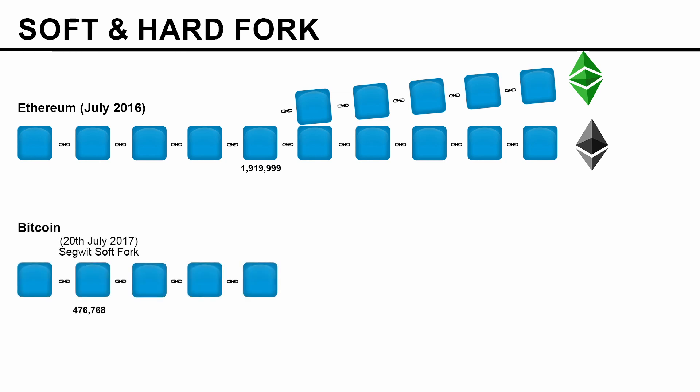Another example of a fork is Bitcoin. On 20th July 2017, Bitcoin accepted Segregated Witness, which was a soft fork, at block number 476,768. We already talked about what Segregated Witness is. Since it is a soft fork, there is no splitting of the chain — you will understand why in a moment.